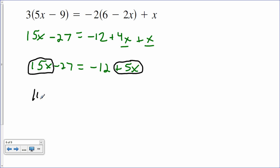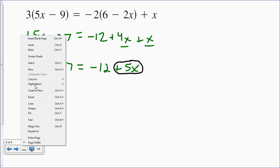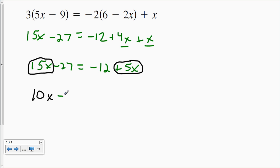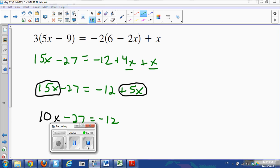So if there are 10 extra after the ones in common cancel out, there will be 10 extra left over on the left. So we have 10x minus 27 equals negative 12. And now you should be home free. That's all there is to it.